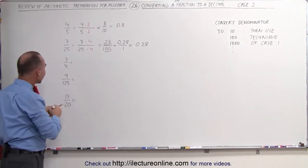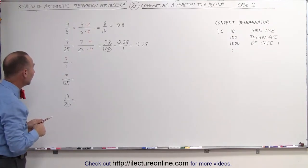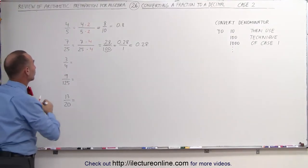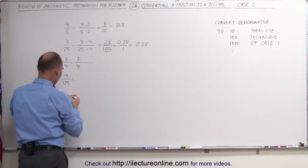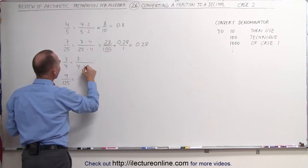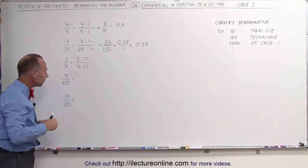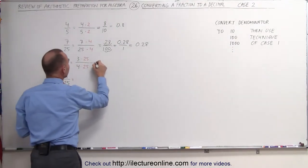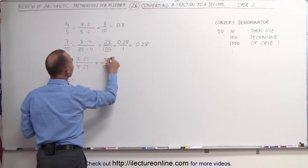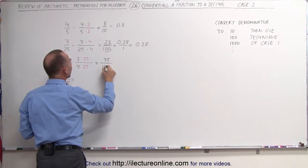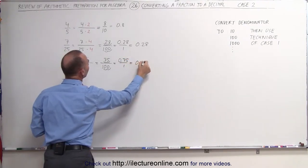On this one, you would like to turn the 4 into a 10, but you can't because 4 does not evenly fit into 10 — but it does fit evenly into 100. That means we have to multiply both the denominator and the numerator by the same number. In this case, 4 times 25 becomes 100, so we multiply the numerator by 25 as well, giving us 75 over 100. We move the decimal place over 2 spots, and this becomes 0.75.